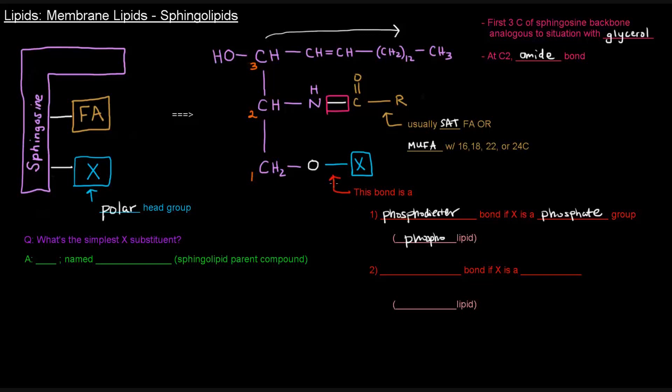But this bond might not be a phosphodiester bond. It could be a glycosidic bond. And it would be a glycosidic bond if X was a sugar or a carbohydrate portion. If that was the case, we'd have a glycolipid. Or a glycosphingolipid or a sphingoglycolipid. The point is that either way, it should make sense to you what's going on there.